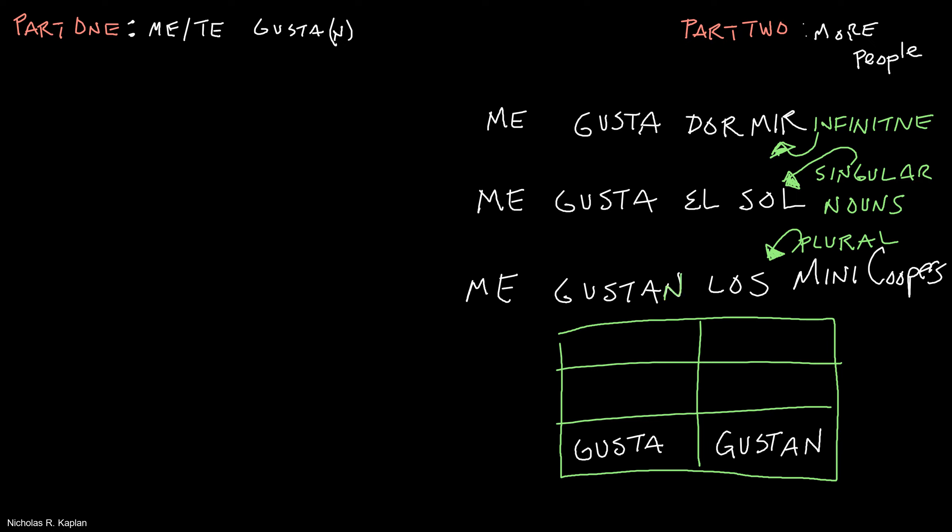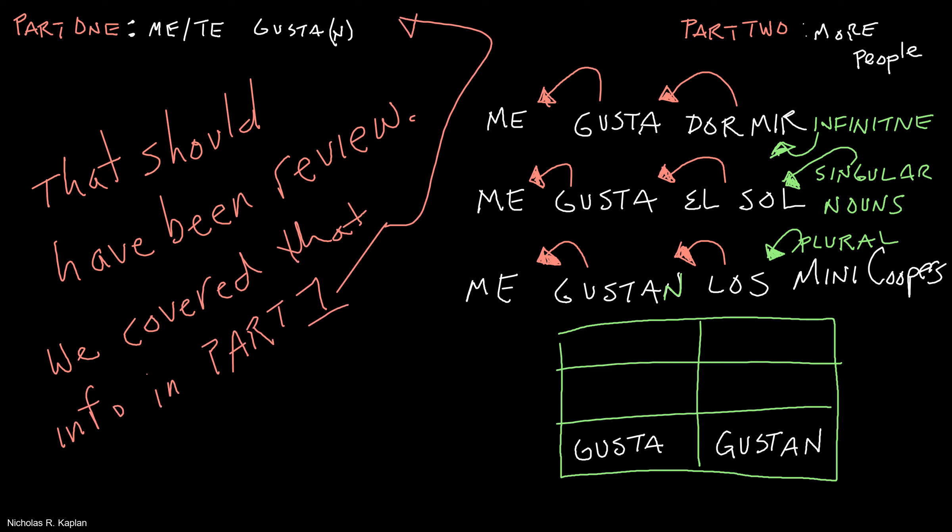We also remember that we need to read it backwards because we think in ideas first and words second. To sleep, it is pleasing to me. The sun, it is pleasing to me. The mini coopers, they are pleasing to me.